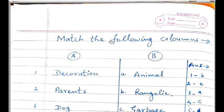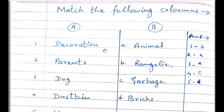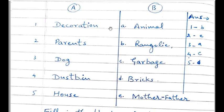Next question: Match the following columns. इन columns को मिलाना है. Column A में है: decoration, parents, dog, dustbin, house. Column B में है: animal, rangoli, garbage, bricks, mother, father. Decoration को rangoli से मिलाएंगे. Parents को mother और father से. Dog को animal से. Dustbin को garbage से. House को bricks से.